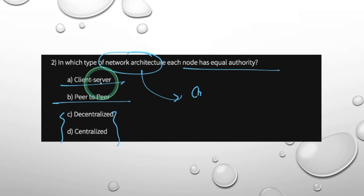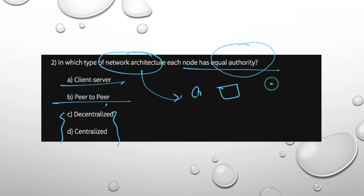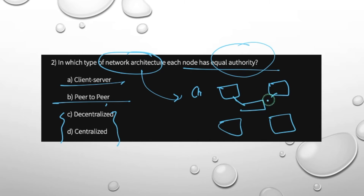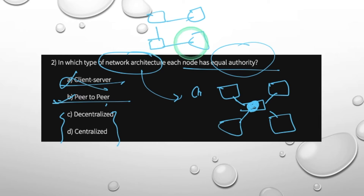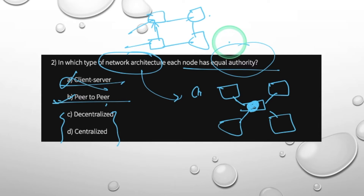In peer-to-peer network, all nodes can equally contribute to the network. Each node behaves itself as a client as well as a server. That is what a peer-to-peer network is.